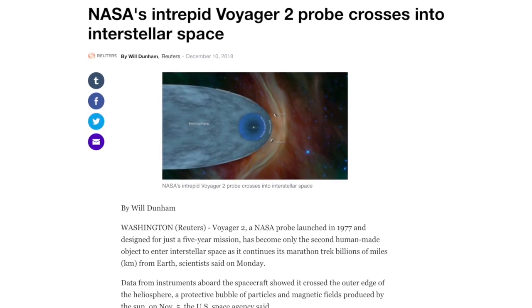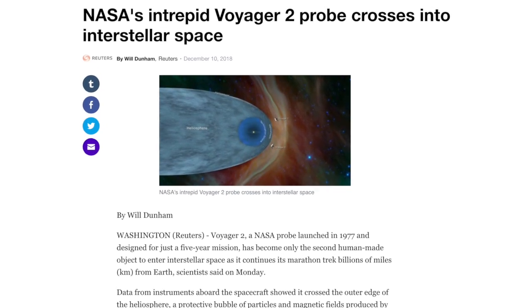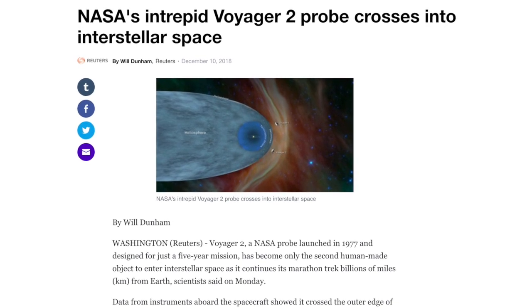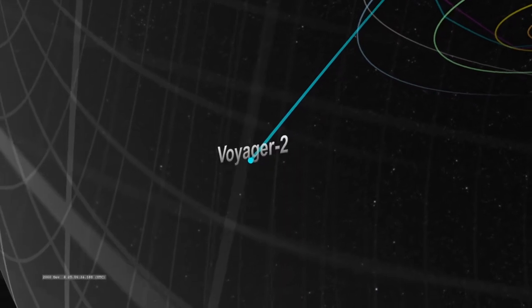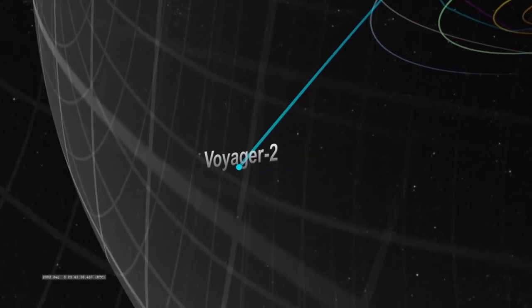And today, scientists have reported that Voyager 2 has now also recently crossed the boundary into interstellar space. And again, the theoretical predictions based on standard solar physics do not match discovery.